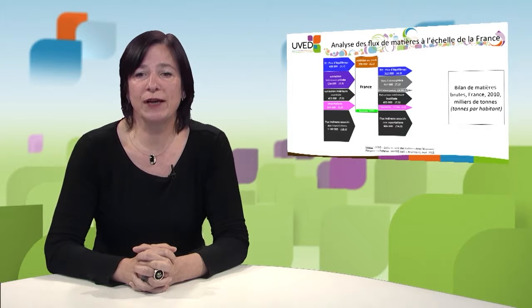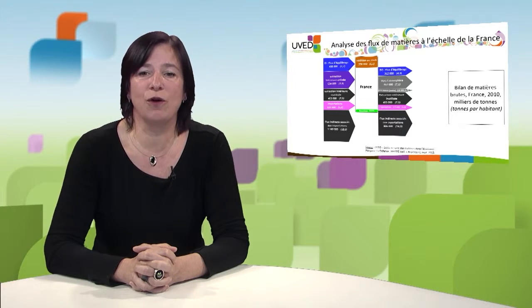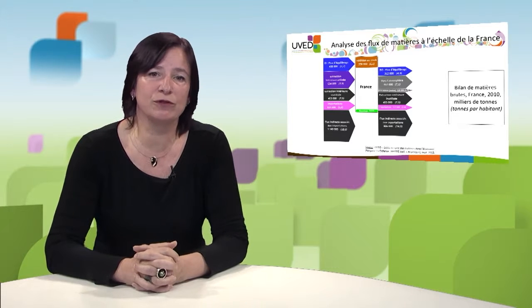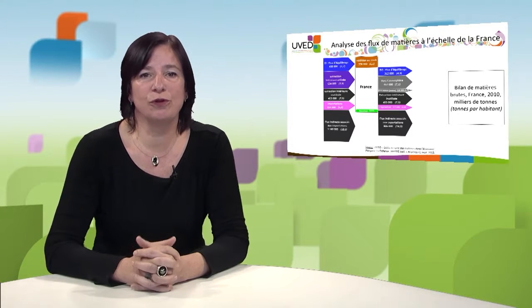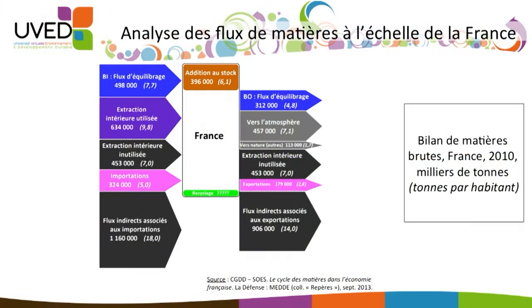Two other observations can be made from this graph. The first is about recycling, shown in green at the bottom and at the heart of the system. It is placed at the heart of the system because recycling neither takes from nor rejects to the environment. However, this recycling is very small compared to all the material flows involved in the operation of a country like France.